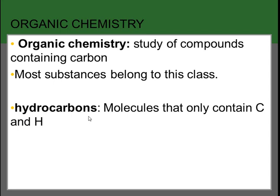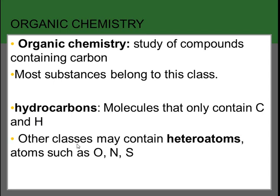Hydrocarbons, as we briefly discussed in a previous chapter, are molecules that contain only carbons and hydrogens. Other classes of organic compounds might have heteroatoms, which are defined in organic chemistry as any atom other than carbon and hydrogen. Oxygen, nitrogen, and sulfur are all common heteroatoms in organic chemistry.